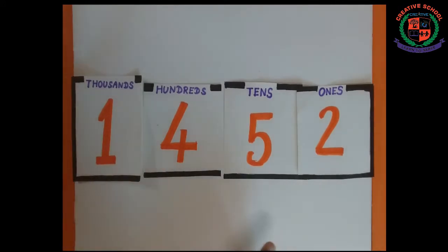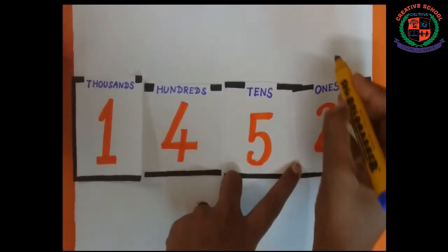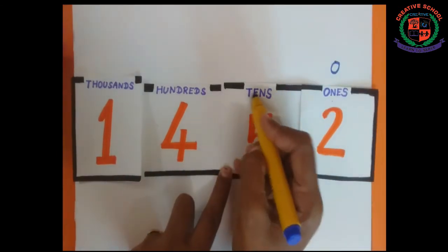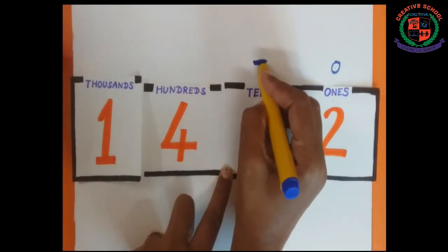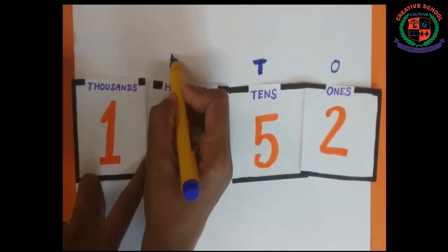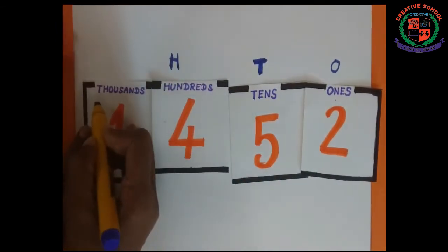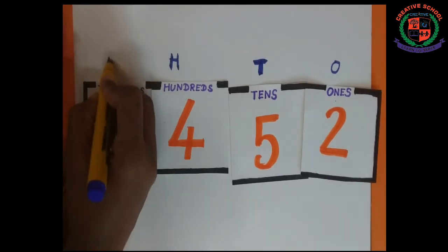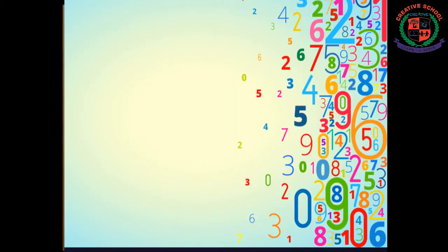How to read this number 1452? Ones can be written as O. Tens can be written as T. Hundreds can be written as H. And thousands can be written as T H.